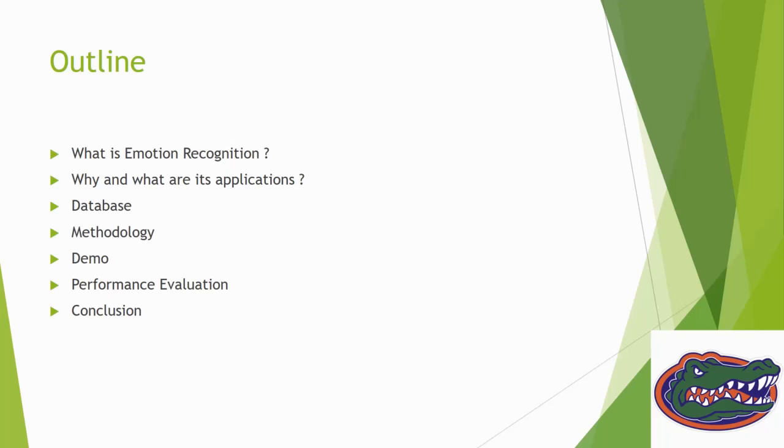The outline of this presentation and demo includes: first explaining what is emotion recognition, its applications, and the database used, then the methodologies employed. After that I will give a computer program demo showing pre-processing and neural network implementation. Finally, I will present performance evaluation with accuracy, losses, and confusion matrix, followed by conclusions on improving accuracy.